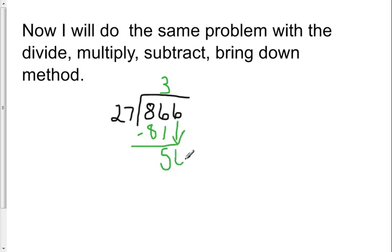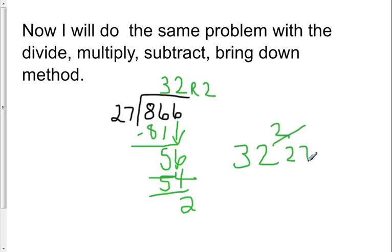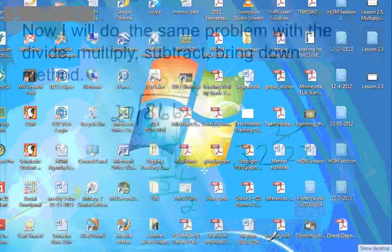I go back to step 1: divide. How many 27s in 56? 2. Multiply: 2 times 27, 54. Subtract. No number to bring down, so I have a remainder of 2. And I can write it this way, or we said we can express it as a mixed number: 32 and my remainder over my divisor, 32 and 2/27.